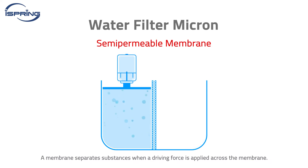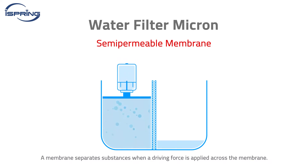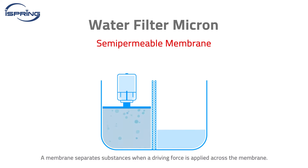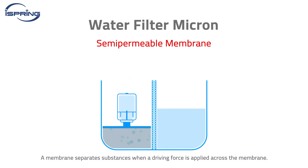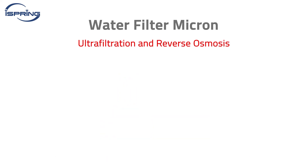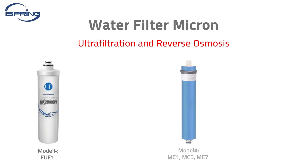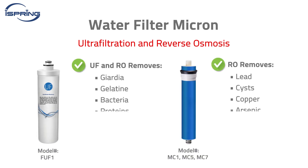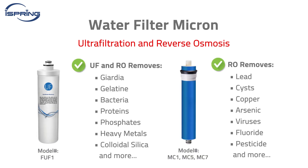Due to the increased awareness of water contamination, households increasingly use membrane processes to remove contaminants. Ultrafiltration and reverse osmosis are two popular filtration technologies used to filter out smaller particulates in the water.